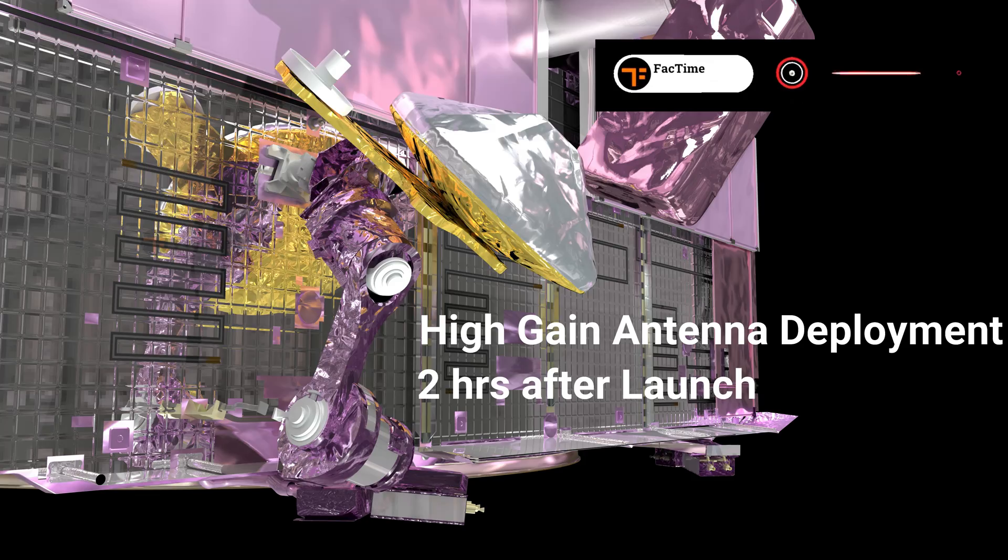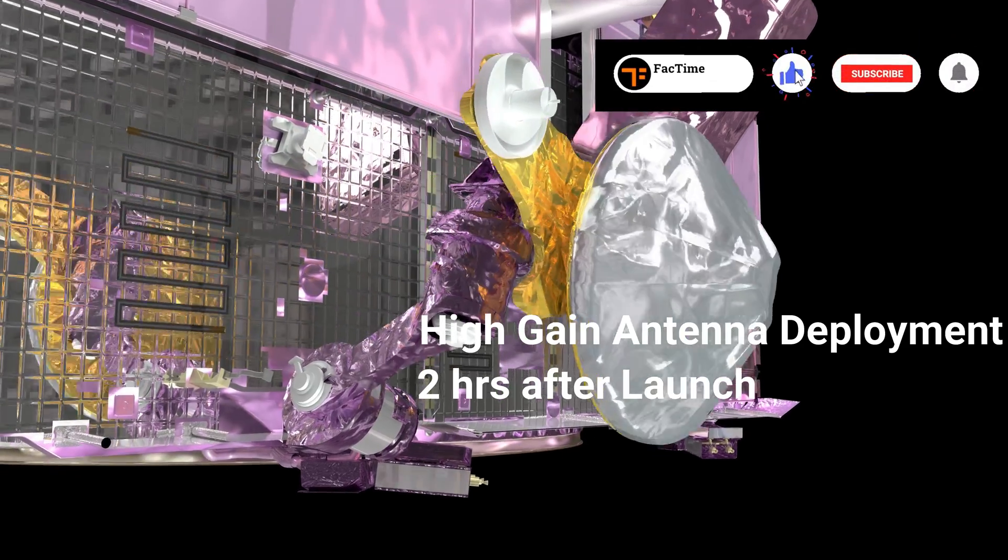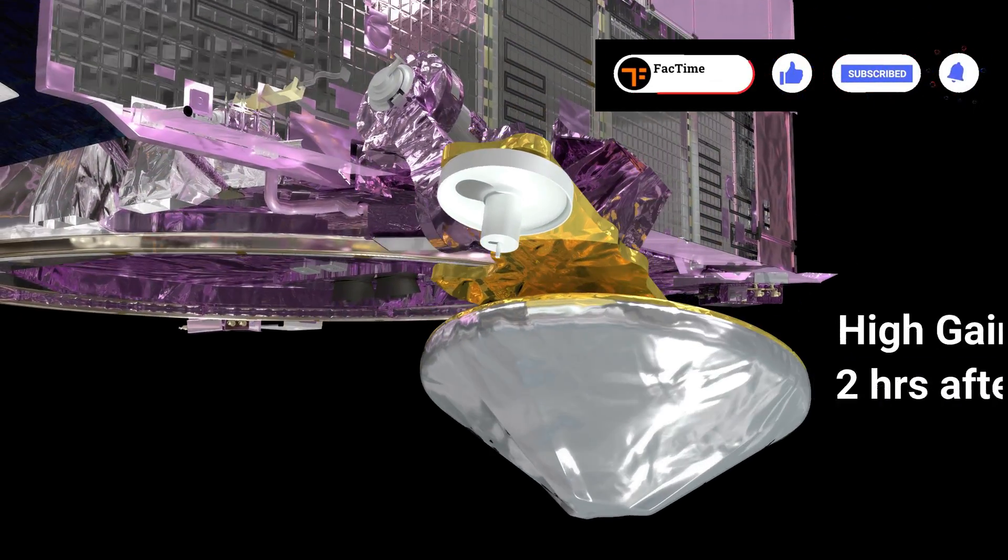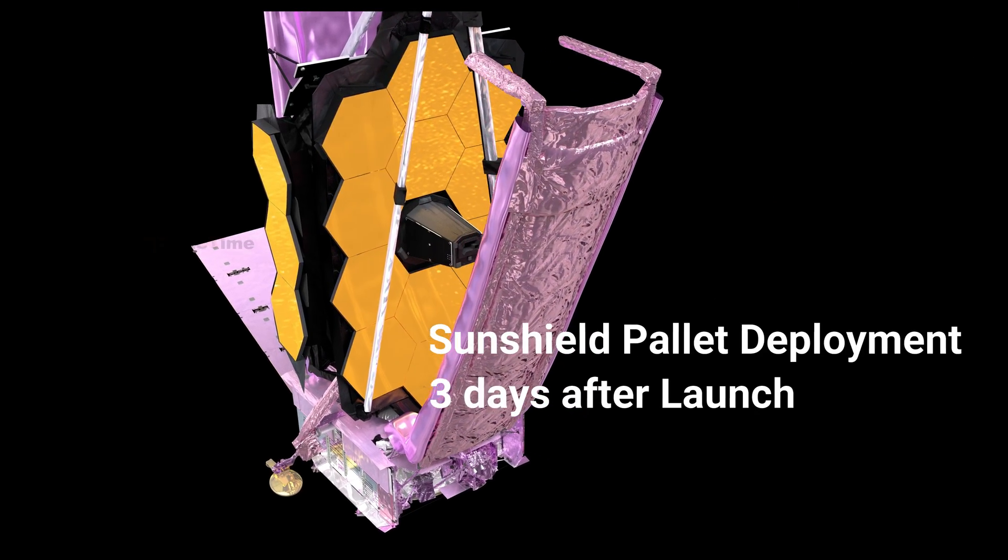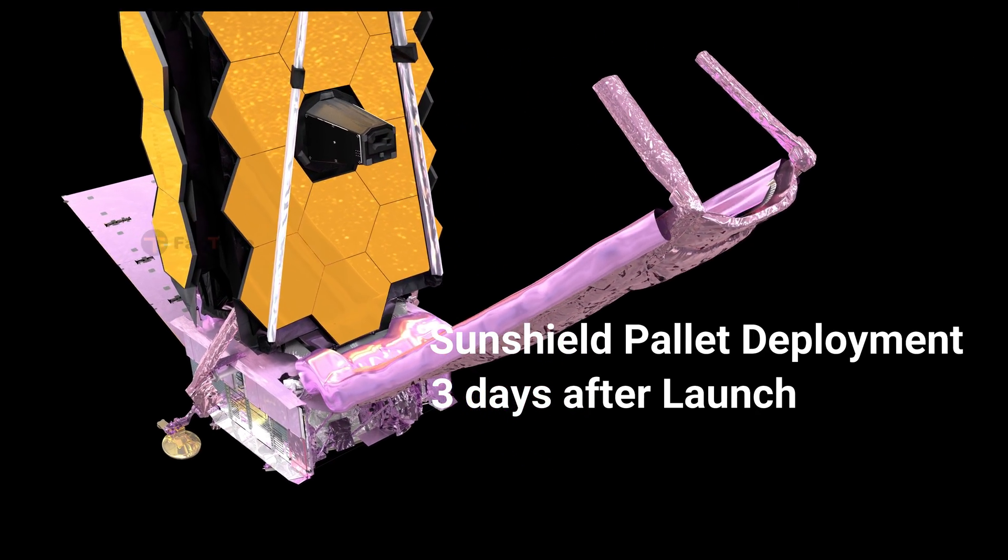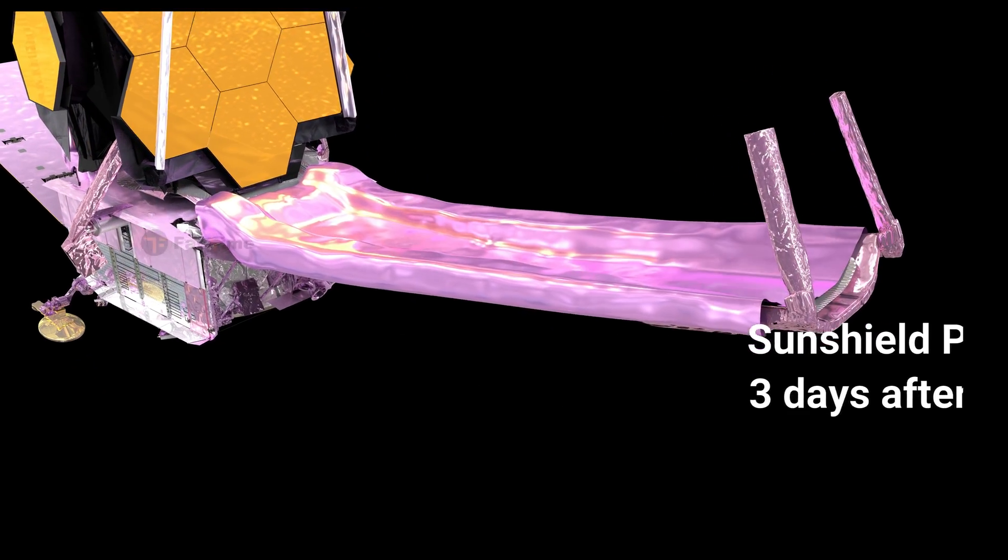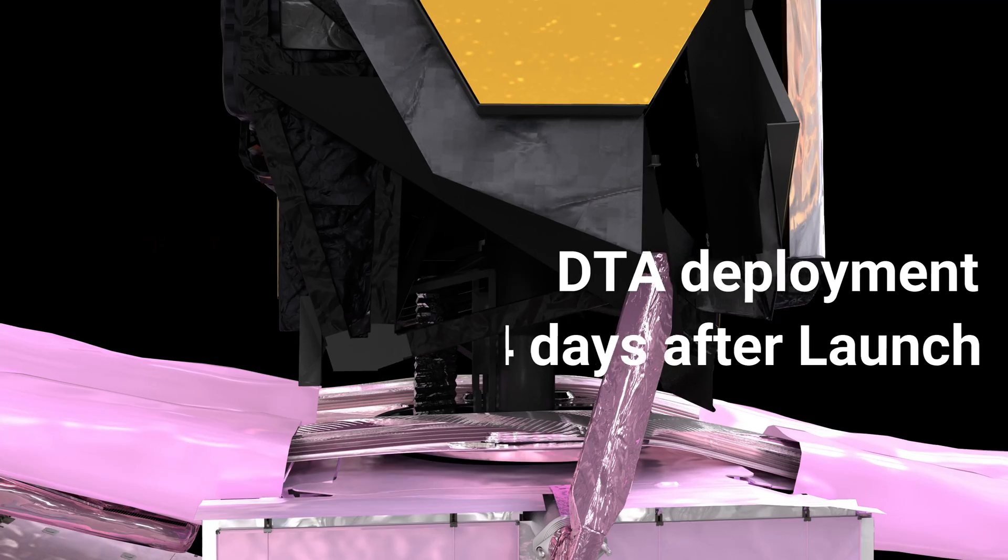High-gain antenna deployment occurs two hours after launch. Sunshield pallet deployment occurs three days after launch. The deployable tower assembly is deployed four days after launch.